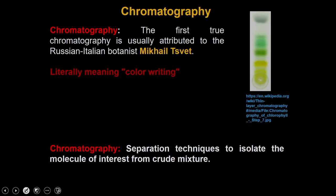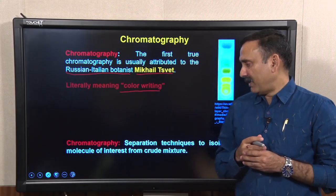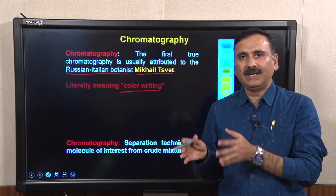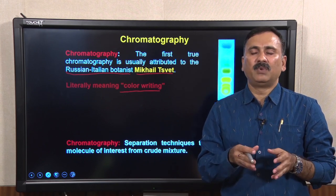Chromatography was first discovered by a Russian-Italian botanist Mikhail Tsvet, and chromatography literally means writing in color. As you can see, what Mikhail performed was he applied a small plant extract onto a column, and when he resolved this sample, he found that the sample was resolved into different bands of different colors, and that is how he gave the name chromatography, or color writing. Before getting into the details, let us discuss the basic principle of separation.